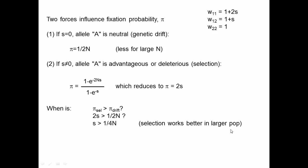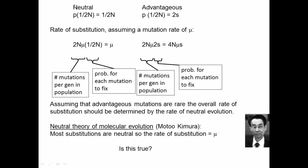So in summary: on the previous slide, selection changes frequency faster than drift; on this slide, selection causes alleles to fix more than drift — both results holding in larger populations. The probability of fixing a new neutral allele is 1/2N. The probability of fixing a new advantageous allele, starting at 1/2N frequency, is 2s.